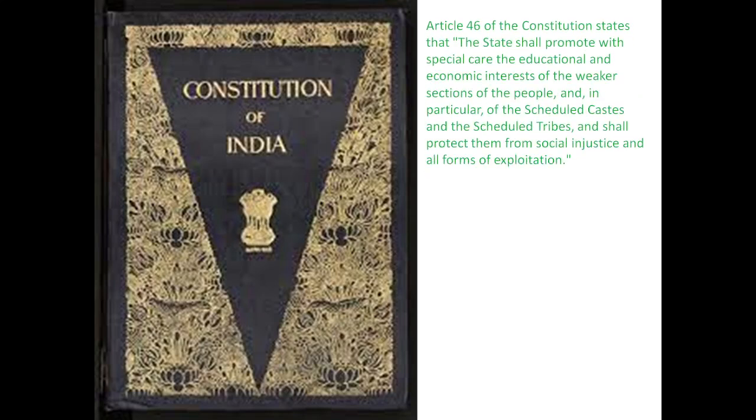Article 46 of the Constitution, under the DPSP, states that the state has the responsibility to promote with special care the educational and economic interests of the weaker sections of the people — in particular, Scheduled Castes and Scheduled Tribes — and shall protect them from social injustice and all forms of exploitation. However, the DPSP is not mandatory and cannot be enforced by the courts.